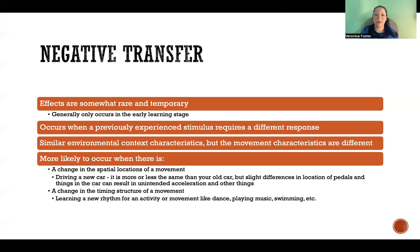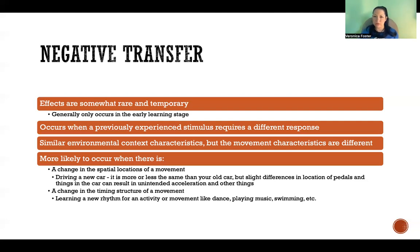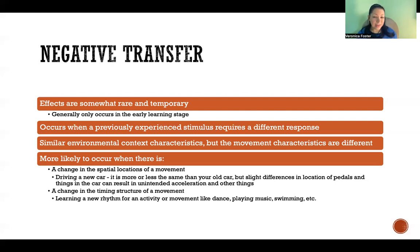A spatial location example: if you're used to driving your car and then get in a friend's car, it's more or less the same action and coordination patterns, but everything is in a slightly different place — the pedals, the stick, the levers and buttons are all a little bit different. A timing structure example: if you've learned the steps in a dance and now you're trying to relearn it with a new rhythm, the old rhythm may interfere with learning the new one.